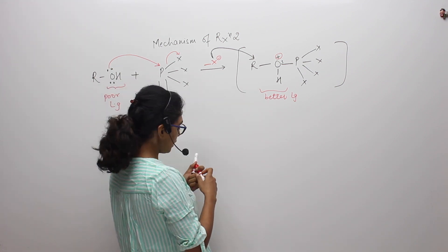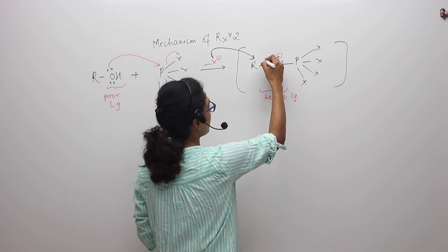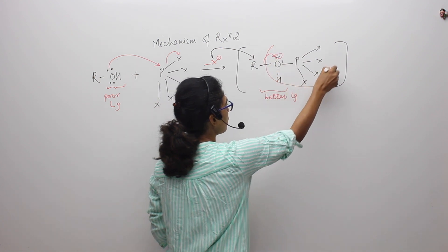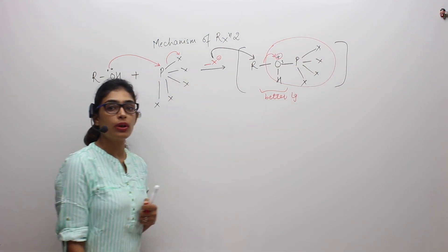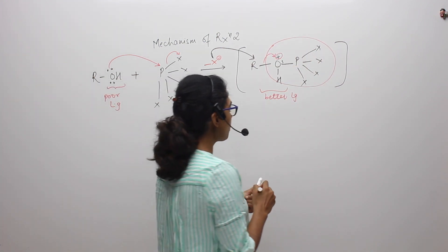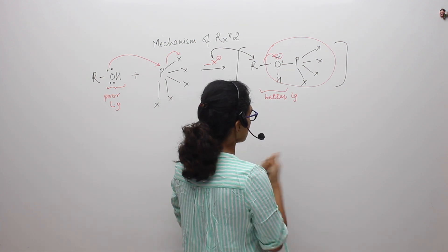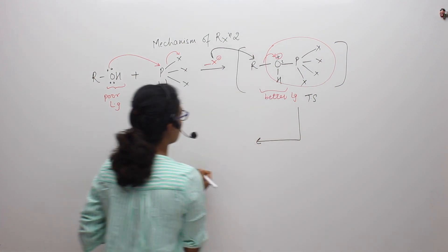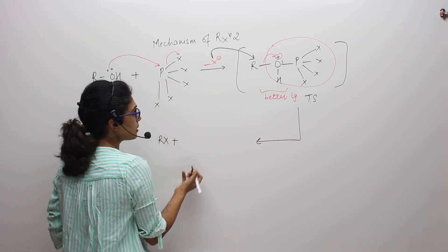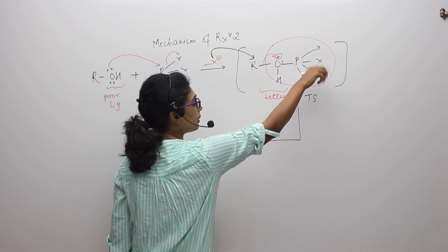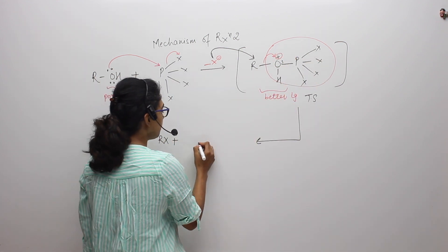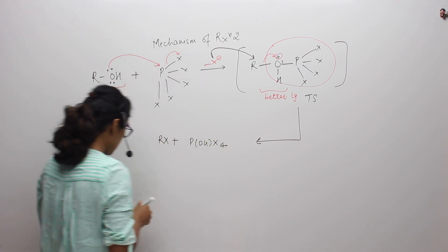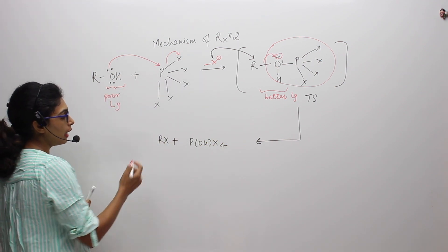Now when X will attack, this oxygen will break its bond with R and this whole group will come out as a leaving group. So what will be the product formed? This is our transition state. The product formed will be RX plus this whole molecule will be coming out as a leaving group. It will be POHX4. Now this is the desired alkyl halide.